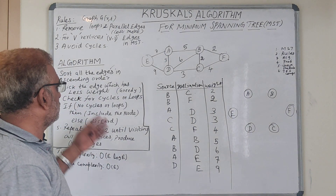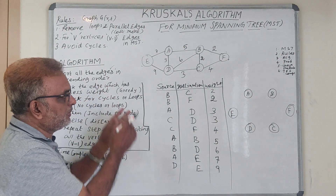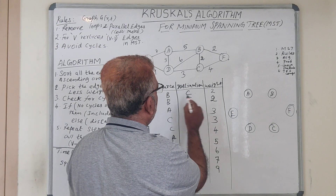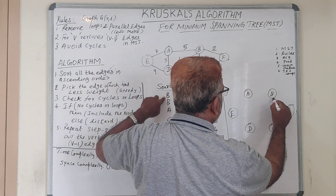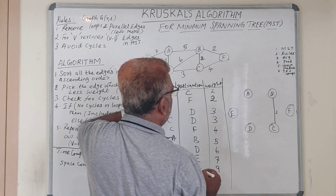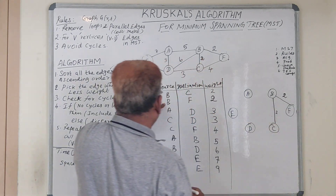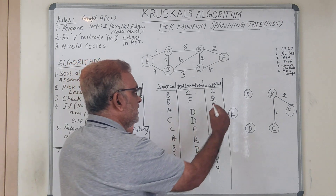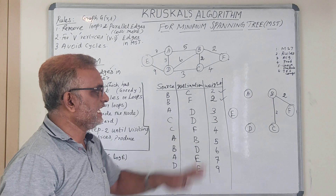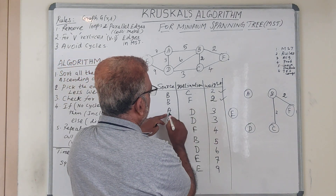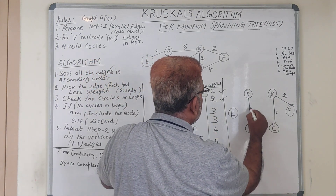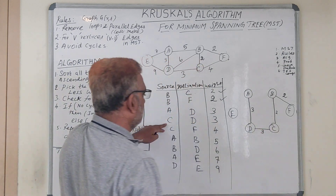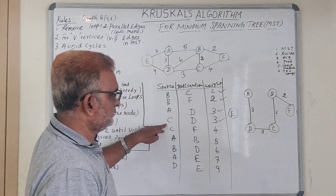Now we apply the greedy algorithm and select edges with minimum weight. First, b-to-c with cost two — no cycle forms, so it is included. Next, b-to-f with cost two — no cycle, included. Then a-to-d with weight three — included. Then c-to-d with weight three — included. We have now included four edges.